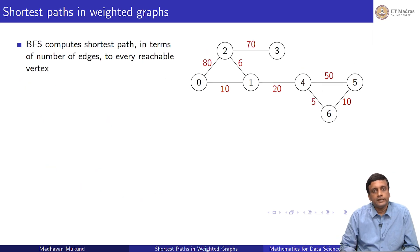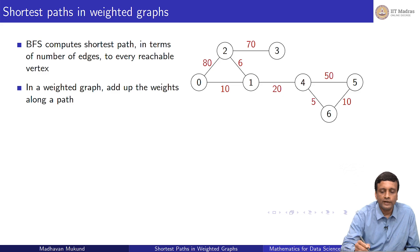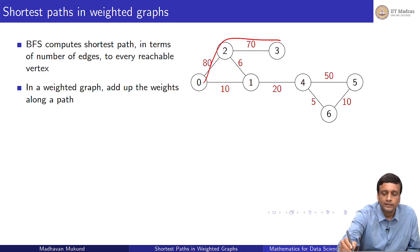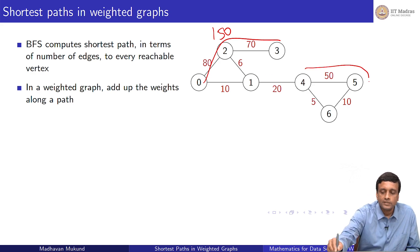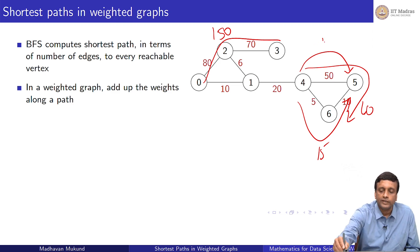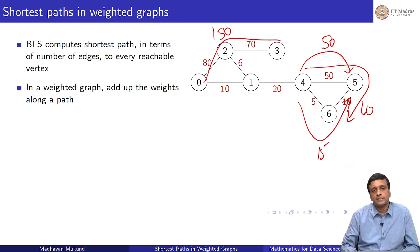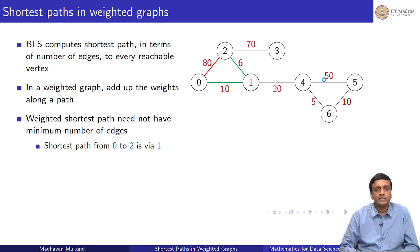Our interest is initially to compute shortest paths in such graphs. We have edge weights and we want to find the shortest path. The shortest path will now be the sum of the weights. For example, taking a certain path might give a length of 80 plus 70, which is 150. Another path might have length 60. More interestingly, one path has length 15, whereas the direct path is 50. So going from 4 to 5 via 6 is actually shorter than going directly from 4 to 5.